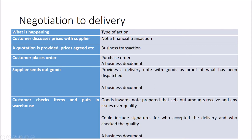The purchase order provides the authorization for the purchase and is referenced throughout by all subsequent documents such as sales invoices. Once the customer places the order, the supplier sends out the goods. When sending the goods, the supplier provides a delivery note — proof of what's been dispatched. You might need to convert purchase order information into a delivery note. This is a business document.